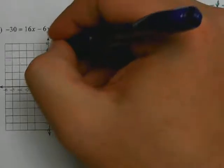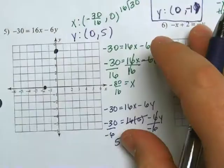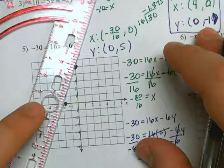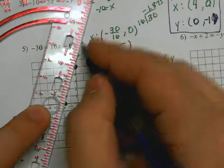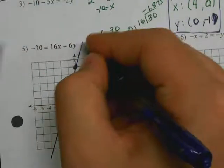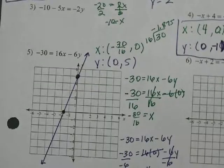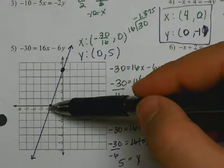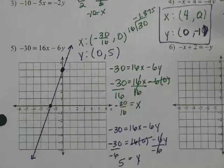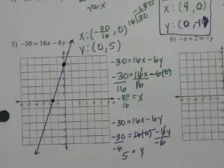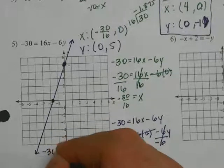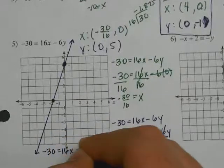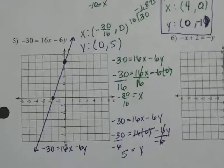Plot that point, then use your straight edge and graph the line. I graphed a line, and you can follow the slope from there. I'll label it: negative 30 equals 16x minus 6y. I've got time for one more problem.